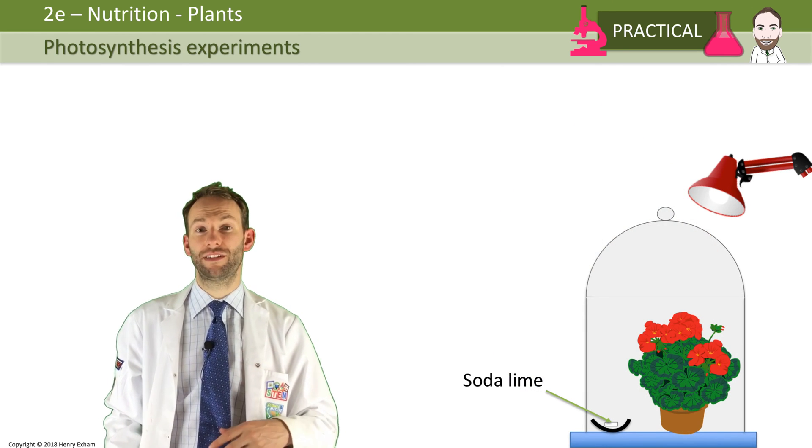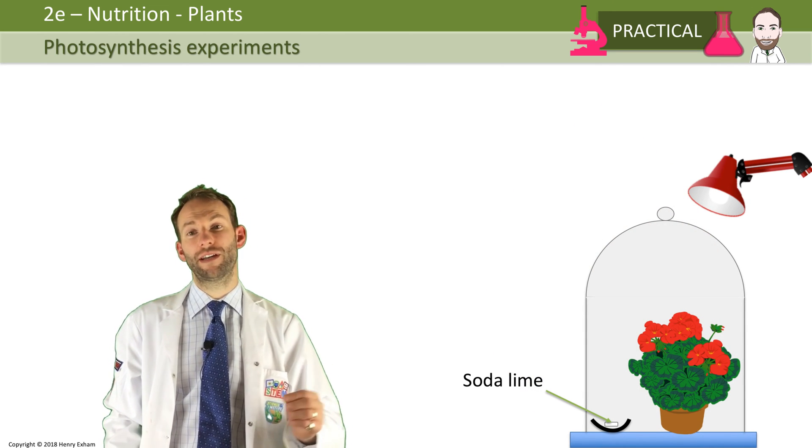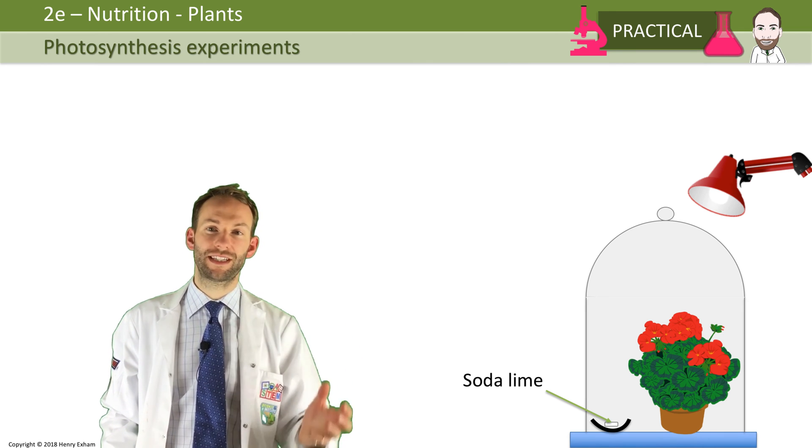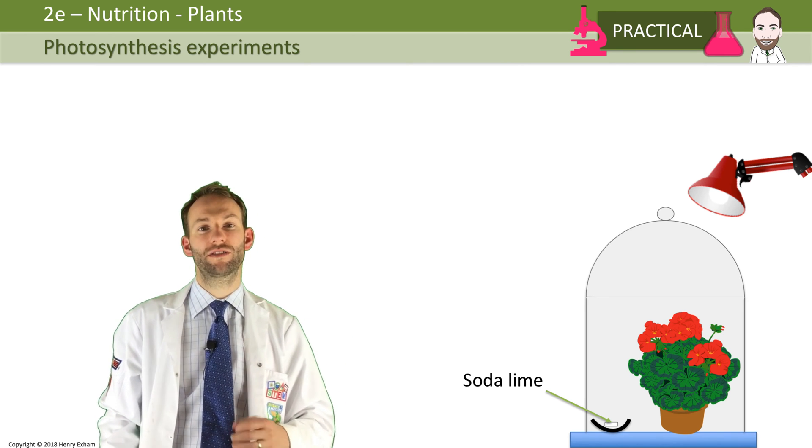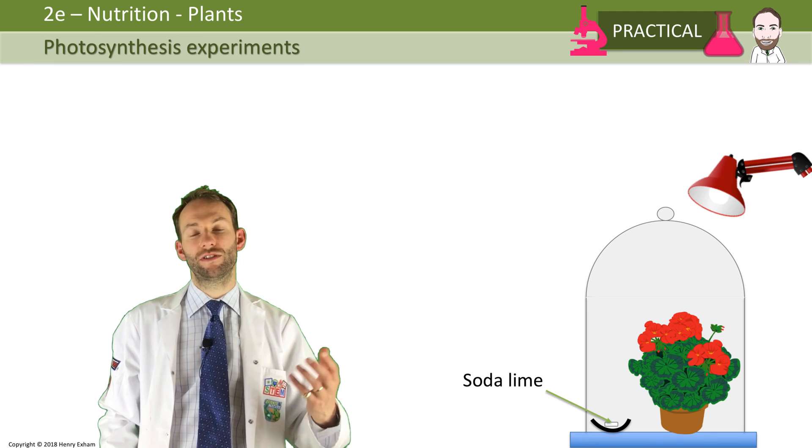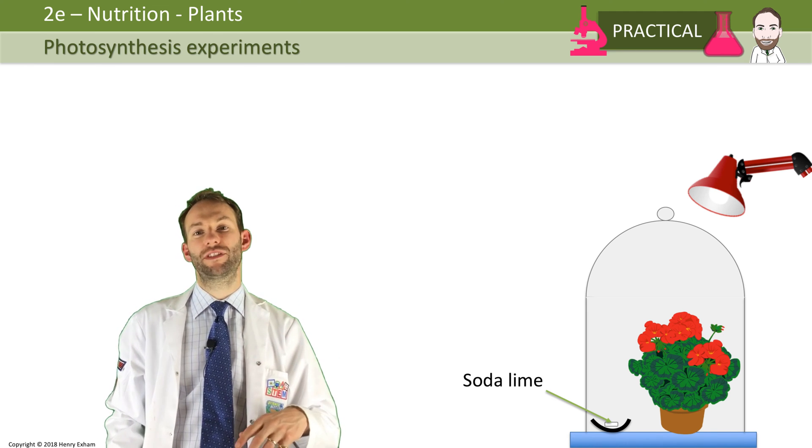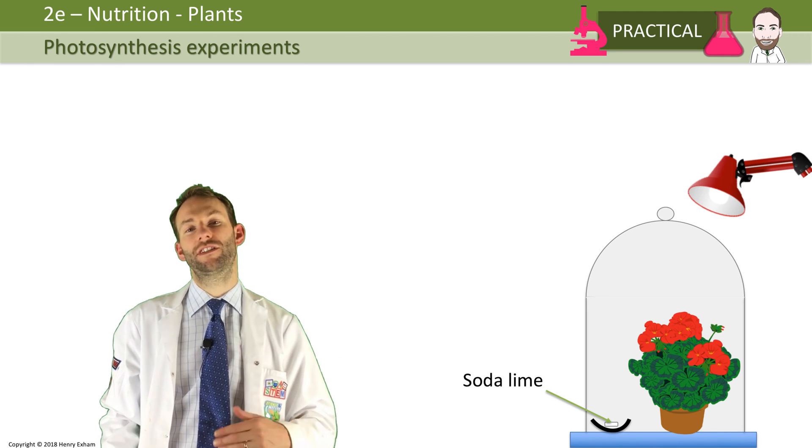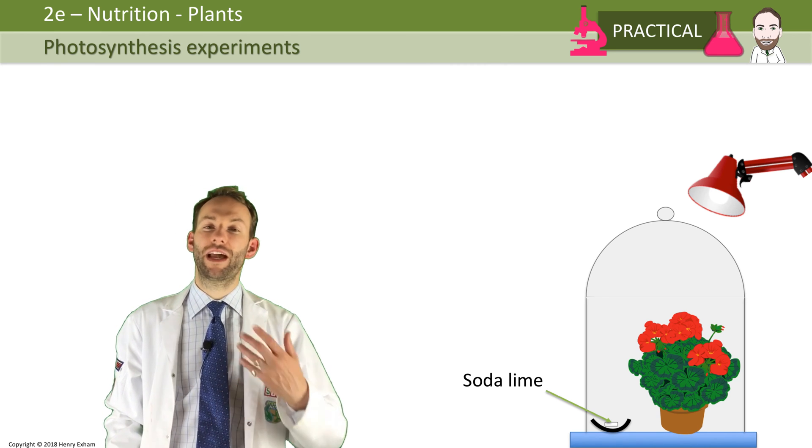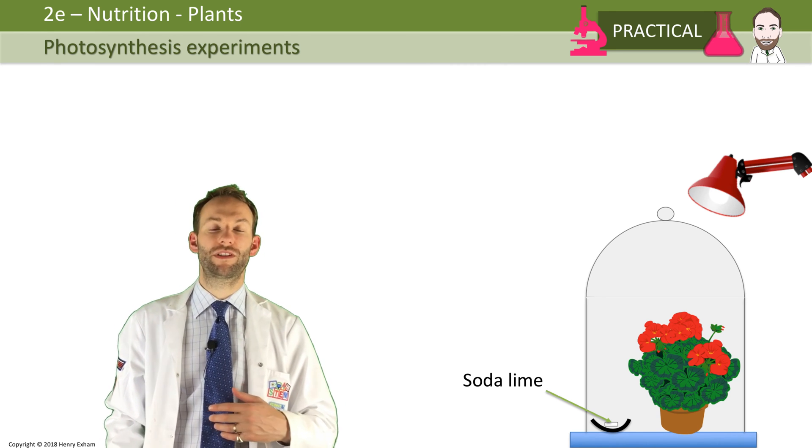You can also prove using this apparatus and starch leaf test that CO2 is needed for photosynthesis. If you put some soda lime in this sealed jar with the plant, the soda lime absorbs CO2, so that makes a very low CO2 atmosphere. Because there's no CO2 there'll be no photosynthesis, no starch is produced, and that leaf will not give you a positive result when you do the starch leaf test on it.